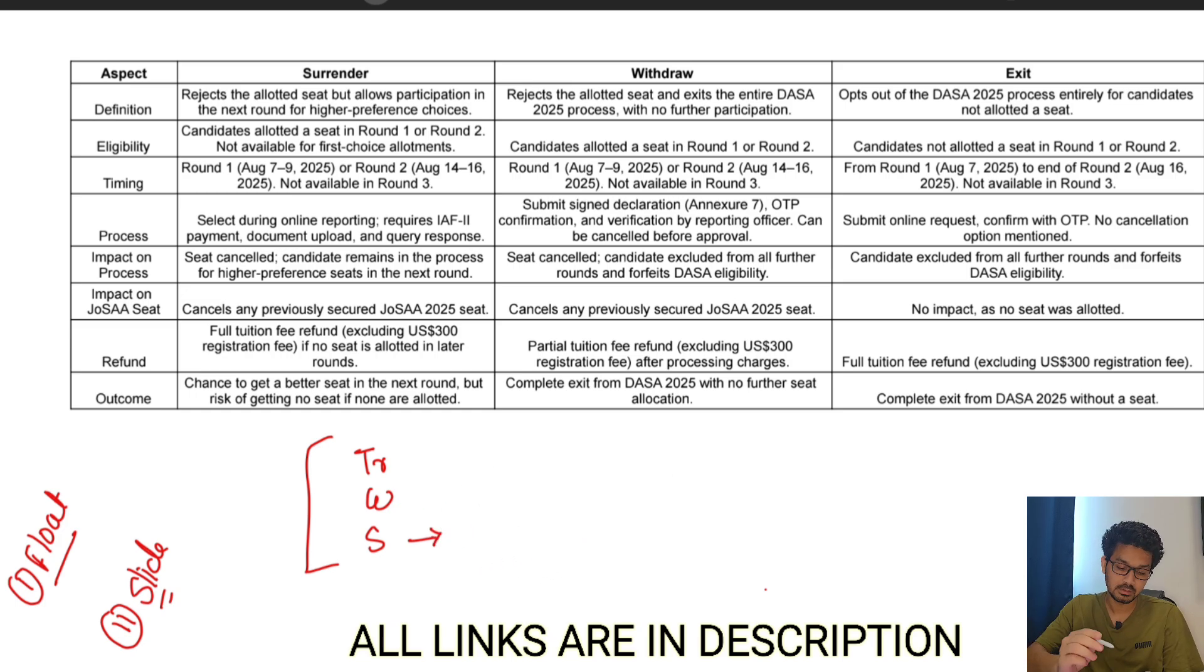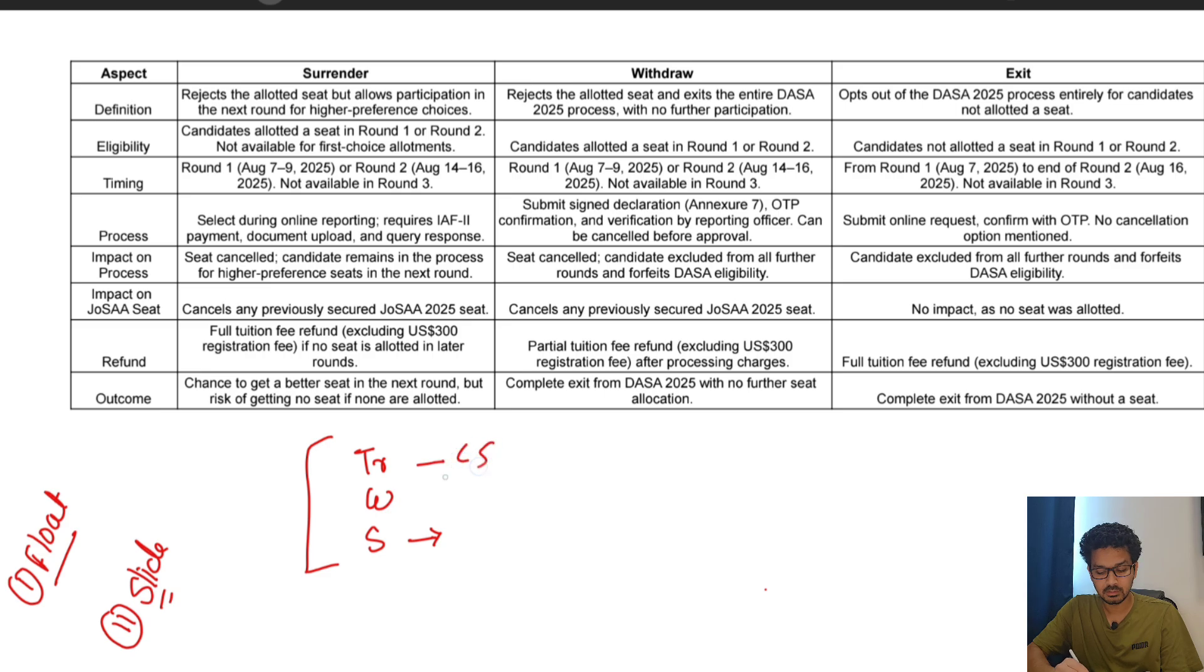Second option is slide. Suppose you put Trichy CS, Warangal CS, Surathkal CS, then Trichy EC, and in the first round you got allotted Trichy EC. But you plan, okay, I want Trichy anyhow, so I will retain this seat in case any upgrade happens, but I want to go to Trichy only. So at this moment you will choose slide. Slide basically means you want to upgrade in the same college with a different branch.